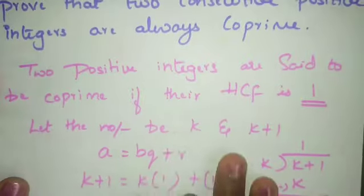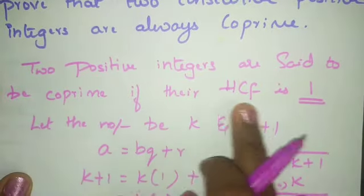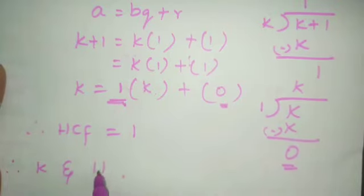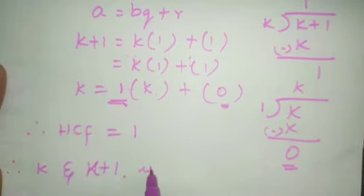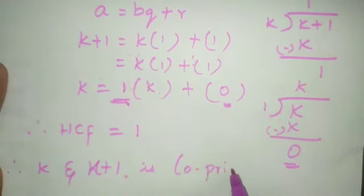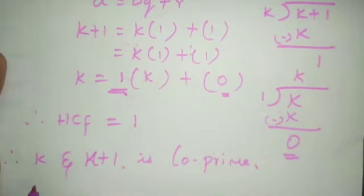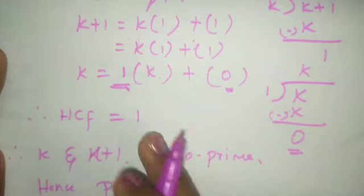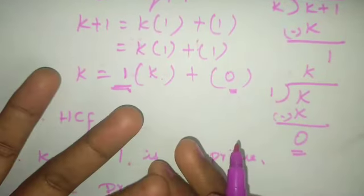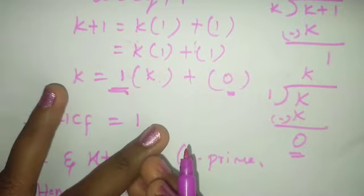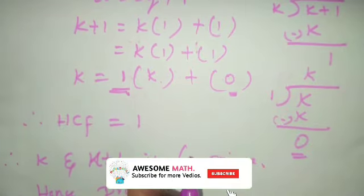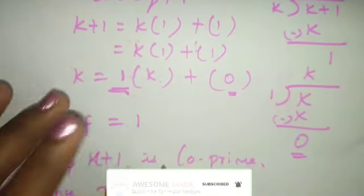Therefore HCF is 1. Since two positive integers are co-prime when their HCF is 1, and we got HCF = 1, therefore k and k+1 are co-prime. Hence we have proved that consecutive integers are always co-prime. That's it for today's class — if you have any doubt, please let me know and make notes. Thank you!